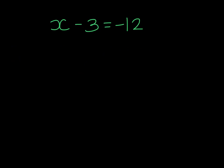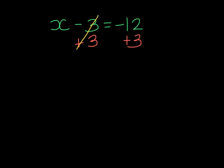Here's our first example and we can see on the right hand side that we have negative 12 and we are subtracting 3 from X. Notice that this negative 12 is not going to alter the way we go about solving. The inverse of subtracting 3 is to add 3 to both sides. On the left hand side if I subtract 3 only to add 3 I am left with X, and on the right hand side if I owe 12 but I have 3 I still owe 9.